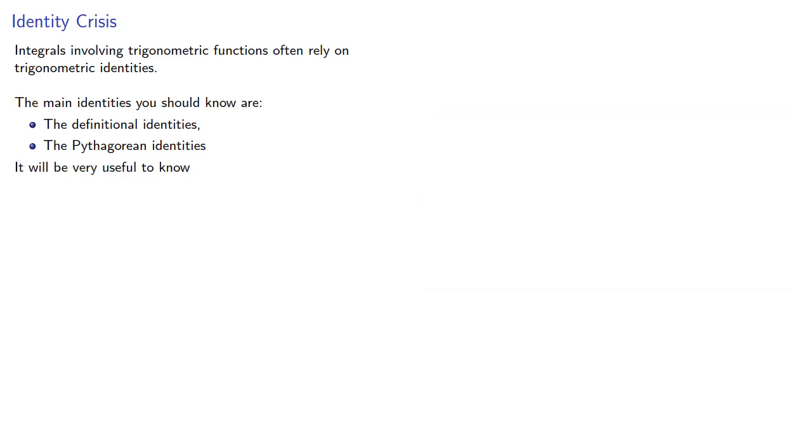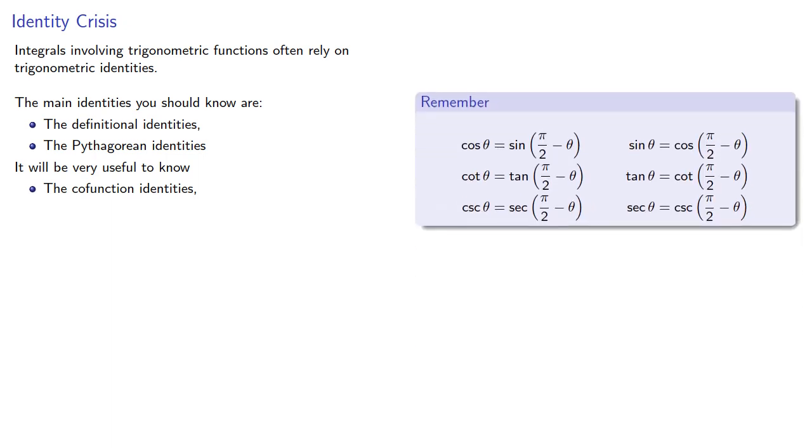It will be very useful to know the cofunction identities for cosine, cotangent, and cosecant in terms of sine, tangent, and secant, and conversely, as well as the angle sum and difference identities.